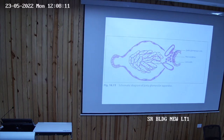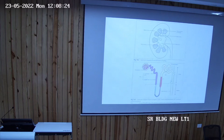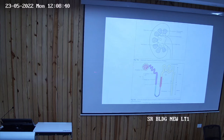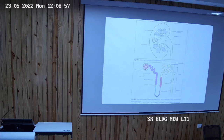The peripheral parietal layer is lined by squamous epithelial cells and the visceral layer is lined by podocytes. In the center of the Bowman's capsule you find a tuft of capillaries called the glomerulus. The capillary network formed by the afferent arteriole entering and the efferent arteriole leaving inside the Bowman's capsule is called the glomerulus. So the renal corpuscle consists of two things: Bowman's capsule and glomerulus.